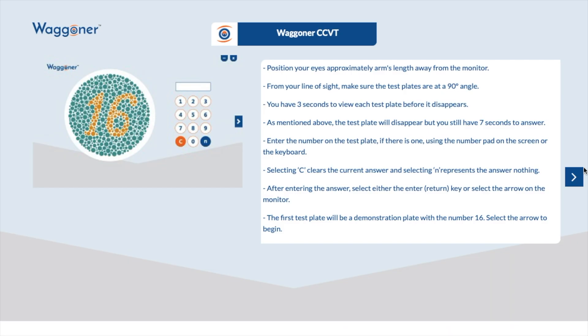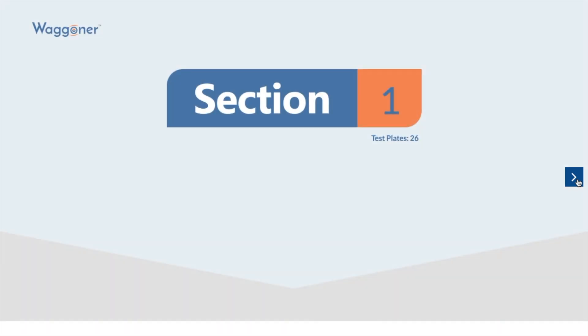Here you can see the instructions for the test that is about to be taken. Select the arrow on the right-hand side. Prior to each section, a section page will appear informing you how many test plates there are in that section.